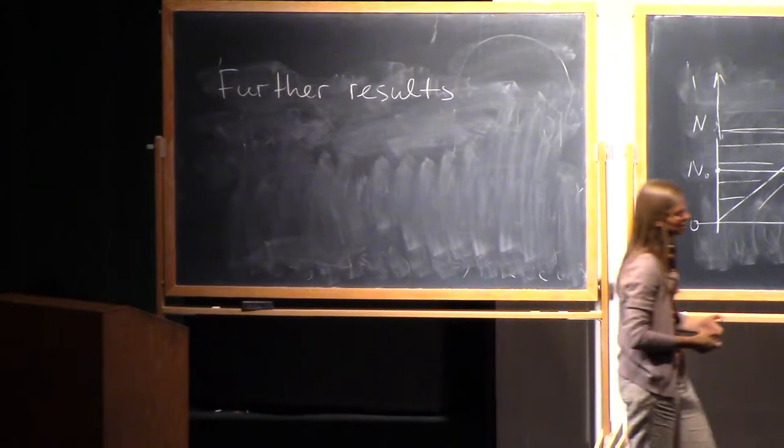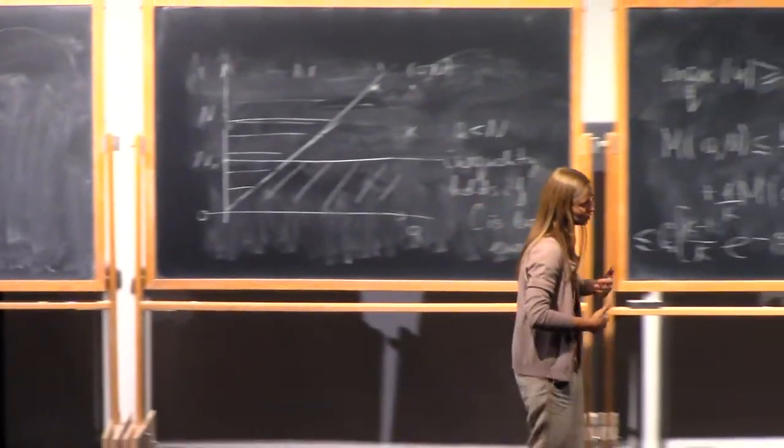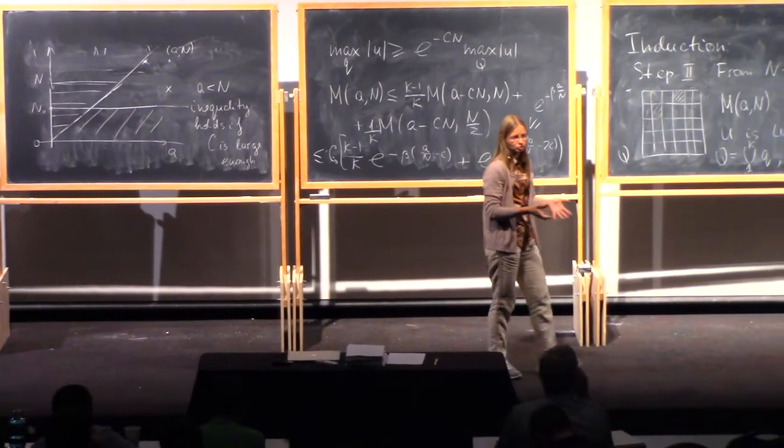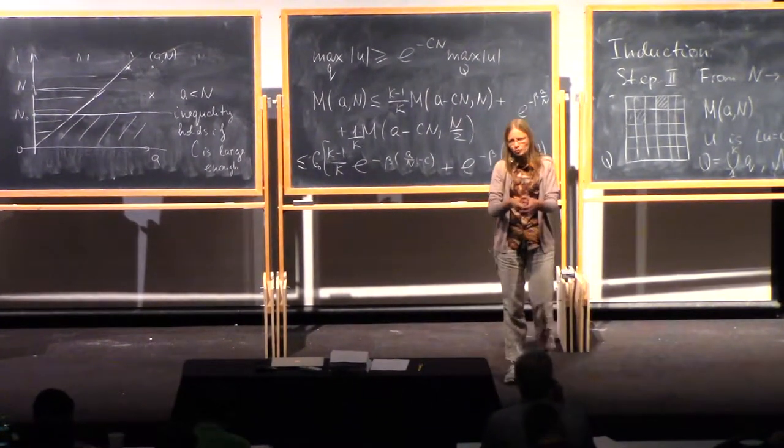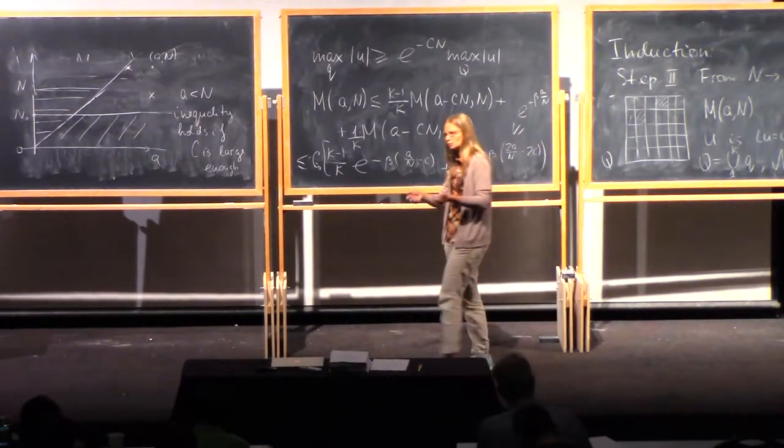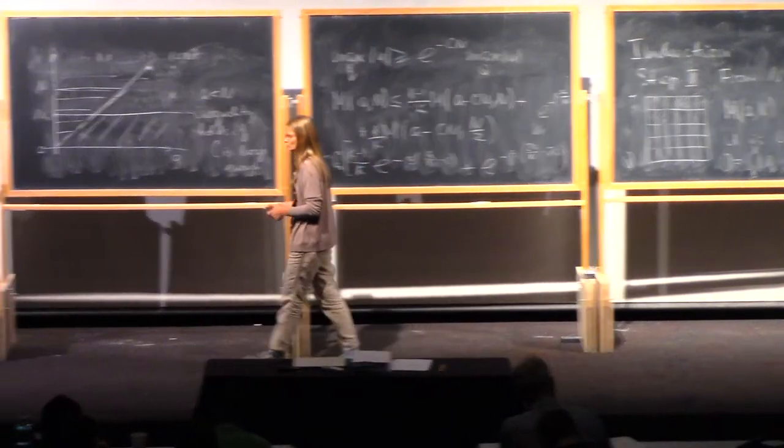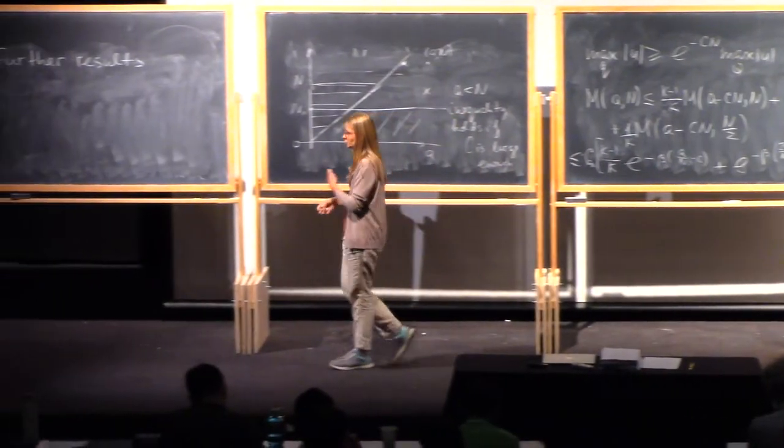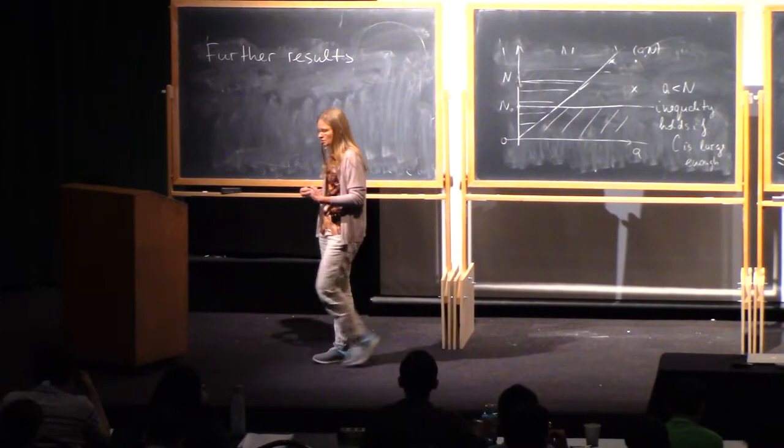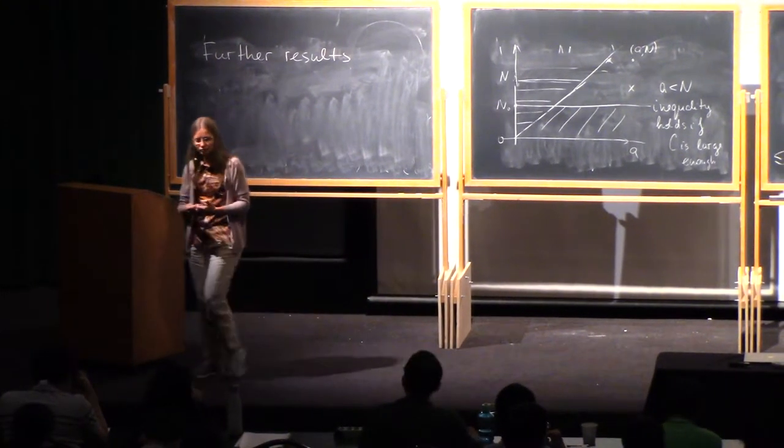What we did here, here we propagated smallness from set of positive measure. Instead of open set in the ball, instead we have some wild set of positive measure, we know the measure, let us propagate the smallness of solution from this set.